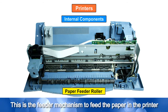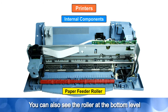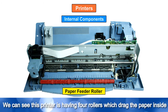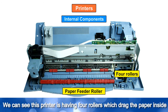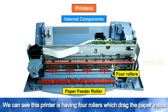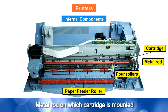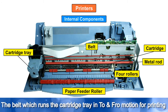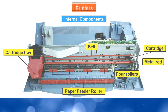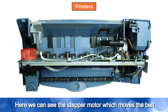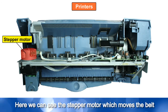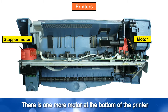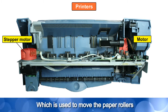Now we can see the internal components of the printer. This is the feeder mechanism to feed the paper. We can also see rollers at the bottom level — this printer has four rollers which drag the paper inside. There is a metal rod on which the cartridge is mounted, and a belt which runs the cartridge tray in a to-and-fro motion for printing. Here we can see the stepper motor which moves the belt, and one more motor at the bottom which is used to move the paper rollers.